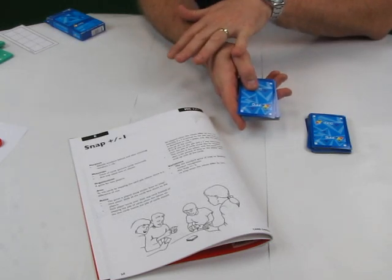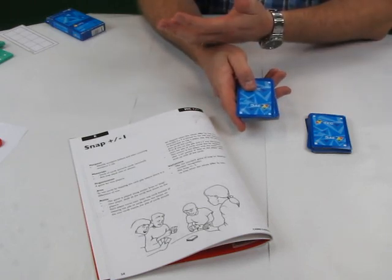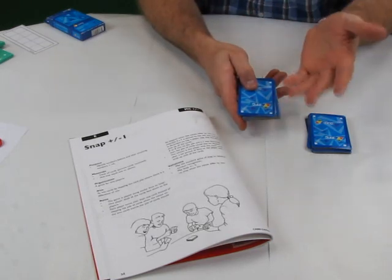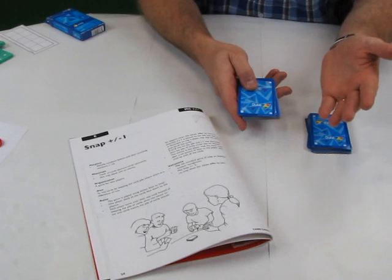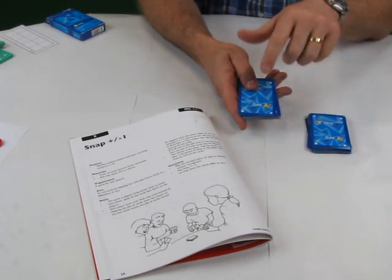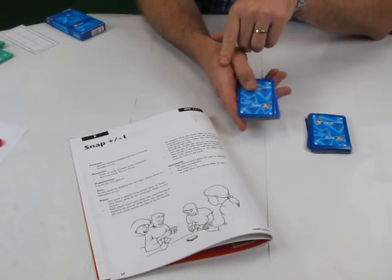And the game that I like playing is Snap One More, One Less. Now, it follows the traditional rules of snap, so roughly each player gets half the cards and they simultaneously turn over the cards. If there's a match in ordinary snap, then you would snap on the cards, but in this case here, you would only snap if a card is one more or one less than the card that's showing.